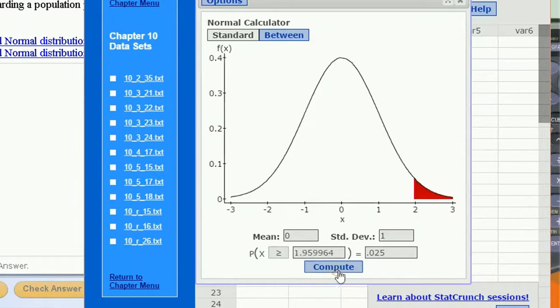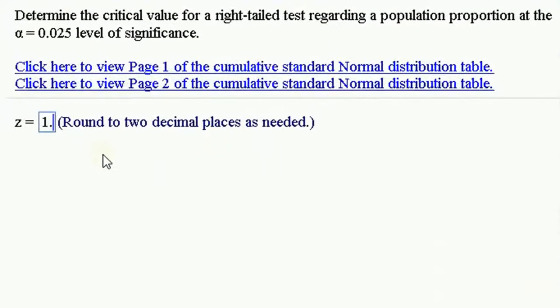So this is what we're talking about. The cutoff for 0.025 in that tail is 1.959. Let's round it up to 1.96.